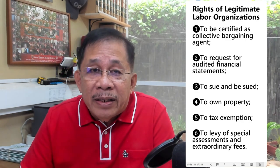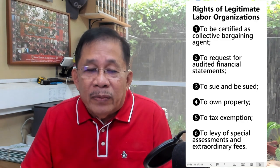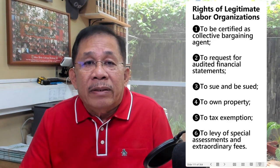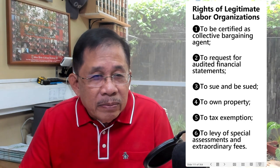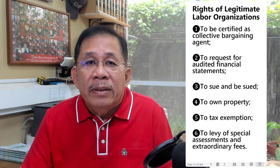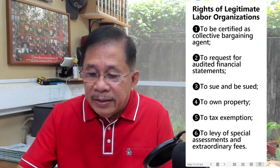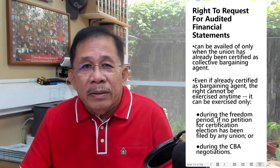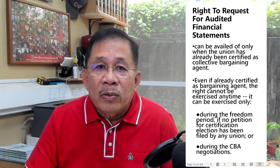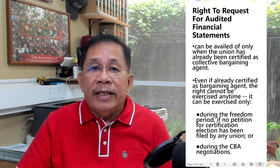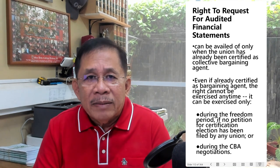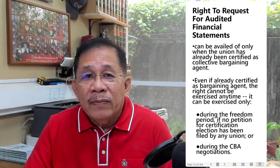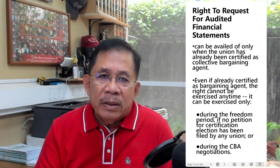The rights of legitimate labor organizations include: the right to be certified as bargaining agent, the right to request audited financial statements, the right to sue and be sued, the right to own property, the right to tax exemption, and the right to levy special assessments and extraordinary fees. The right to request audited financial statements can be availed of only when the legitimate labor organization has already been certified as bargaining agent, and even then, only during the freedom period if no petition for certification has been filed, or during CBA negotiations.